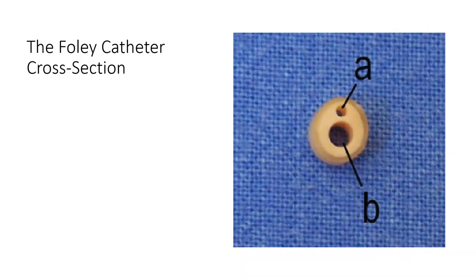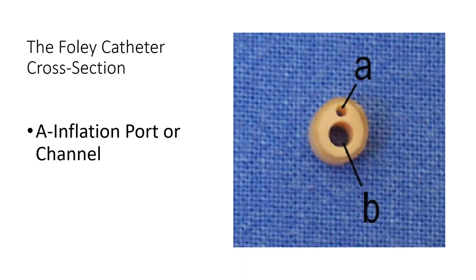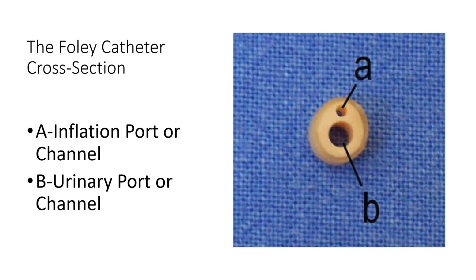Foley catheters have two channels. On cross-section, the smaller diameter channel is the inflation port, and the larger channel is the urinary port.